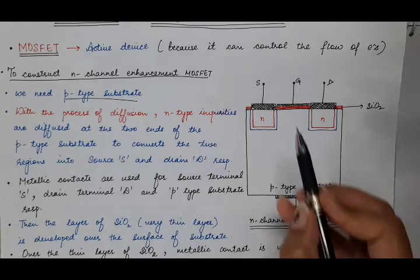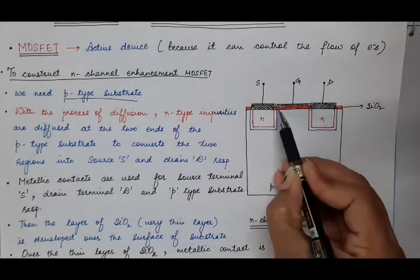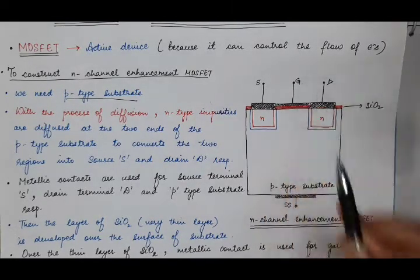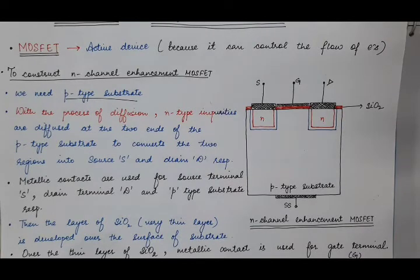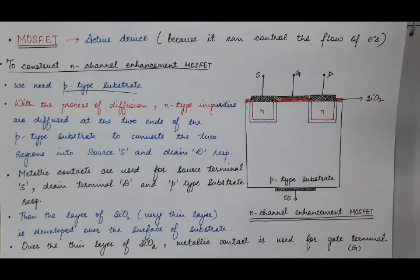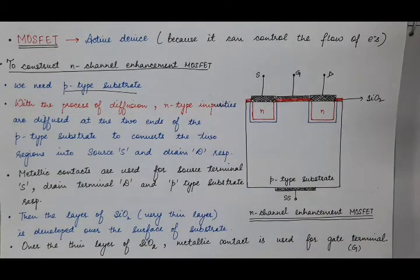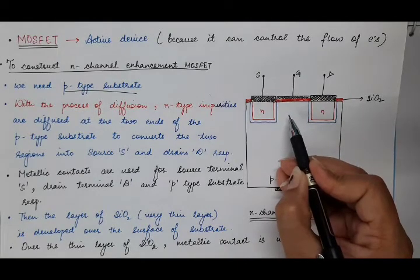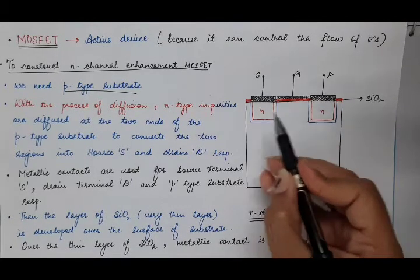Over this thin layer of silicon dioxide, a metallic contact is developed for the gate terminal. Now we will discuss how the channel is formed between the source and drain. Because in case of FET, current only flows if there is a conducting channel between the source and drain. And here you can see, initially in case of enhancement type MOSFET, there is no channel between the source and drain.